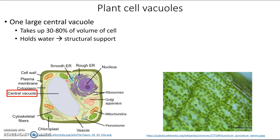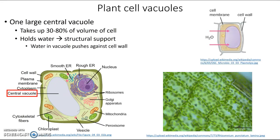The way it provides structural support is that the water inside the vacuole pushes out against the cell wall on the outside of the cell. You've got a single cell with the cell wall around it, which is a little bit rigid but flexible, and water comes into this vacuole and pushes against the cell wall. It's kind of like a water balloon that's really full and firm — plant cells need the water in that vacuole to keep them firm.